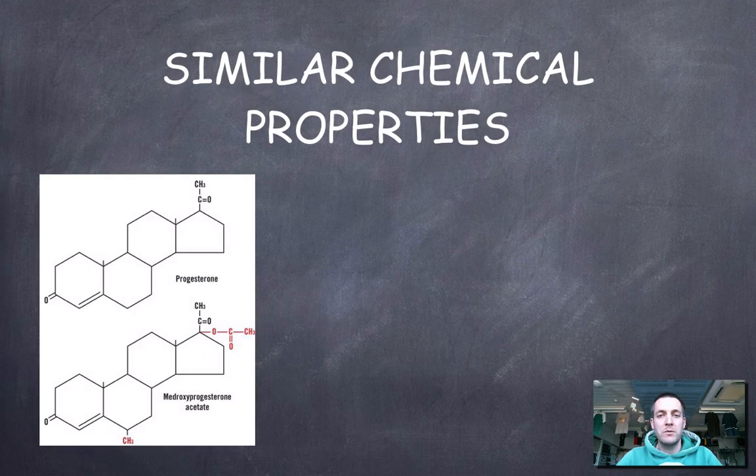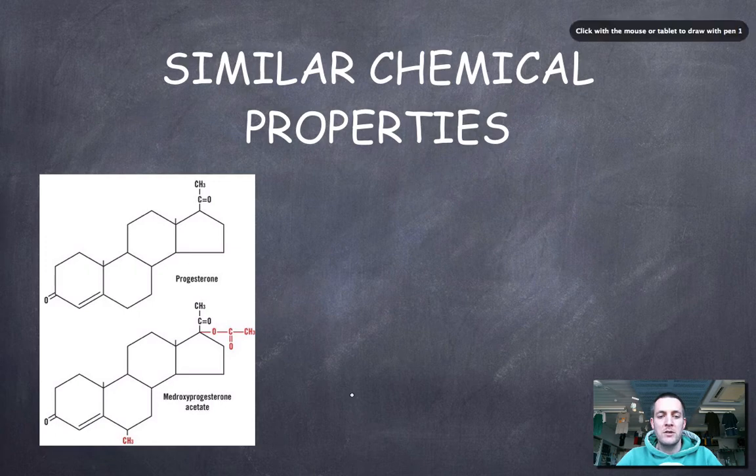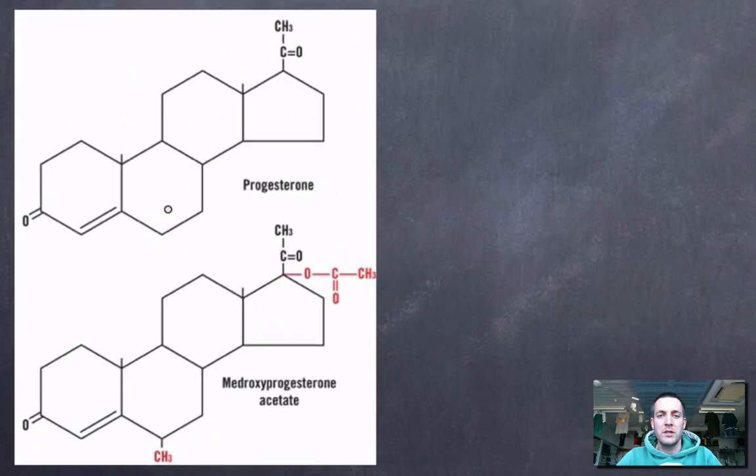Having similar chemical properties, as we've just said, is to do with having similar arrangements of atoms. So here's a very complicated example, which you certainly wouldn't have to remember, but at the top here we can see progesterone, which is a hormone which the human body produces. It's very important in the menstrual cycle. And because the menstrual cycle is something that people like to play around with quite a lot, because of birth control and things like that, we have tried to synthesize chemicals that will imitate progesterone.